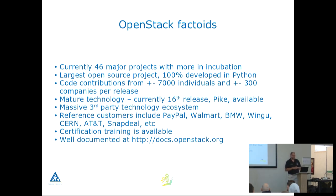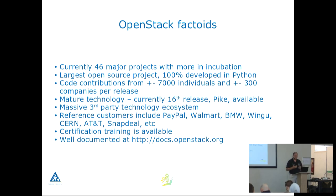Some factoids about OpenStack: there are currently 46 projects in active development. If we add things currently in incubation, it's probably around 60 to 65. It is the largest open source project at the moment, and it is 100% developed in Python. For the latest release, there are about 7,000 software engineers who contributed code as individuals, and additional code from about 320 companies — including Walmart, which alone has about 7,000 engineers working on OpenStack.